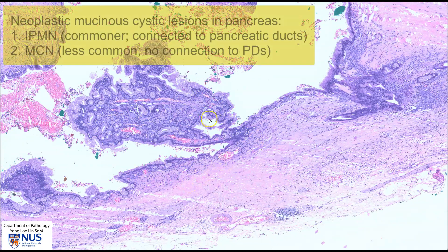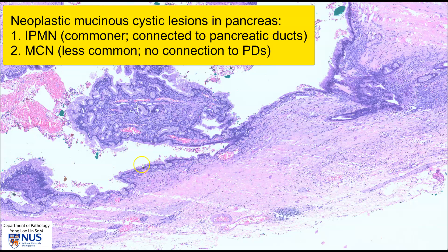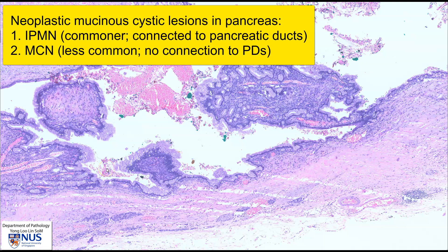There is another cystic neoplasm in the pancreas which is also lined by mucinous epithelial cells and also produces abundant extracellular mucin — that is known as the IPMN, or the intraductal papillary mucinous neoplasm. That tumor does not have this characteristic cellular ovarian-type stroma. Another key difference is that the IPMN is usually connected to the pancreatic ductal system, whereas the mucinous cystic neoplasm is not connected to the pancreatic ductal system.